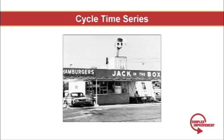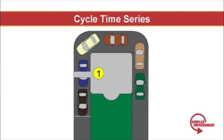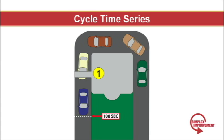This is an old-fashioned drive-through. Back in the day there was only one window where one employee would take the order, take your money, give you change, and give you your food. This took about 108 seconds or one minute and 48 seconds. If I was an observer watching this I would see a car leaving every 108 seconds. In other words, the cycle time was 108 seconds.